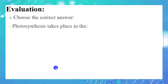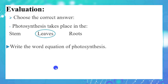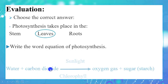Choose the correct answer: photosynthesis takes place in the stem, leaves, or root? It happens in the leaves. Write the word equation of photosynthesis: water plus carbon dioxide, in the presence of sunlight and chlorophyll, will produce oxygen and sugar — sugar which is starch.